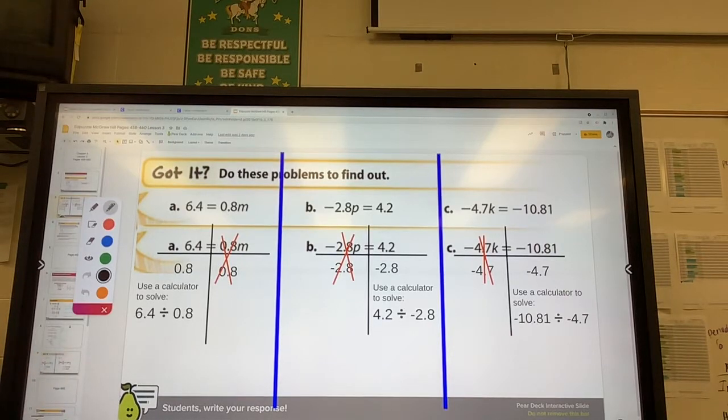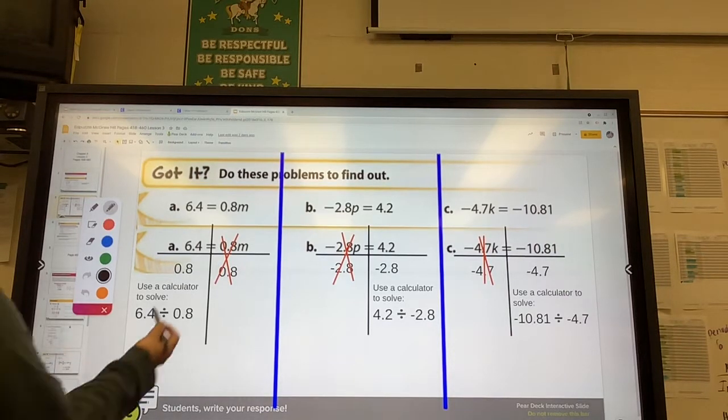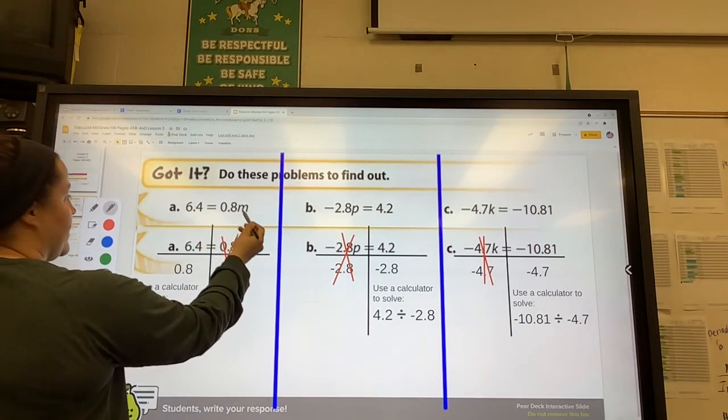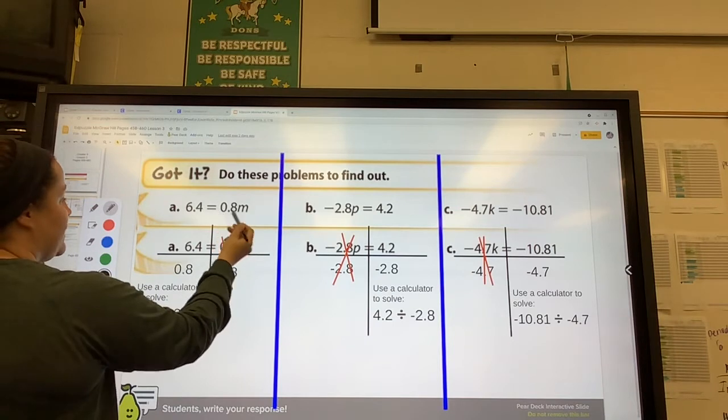Okay, so we're going to solve these problems. Our goal is to get the variable by itself. So when you're multiplying something by the variable to get rid of it, you need to divide by that number.